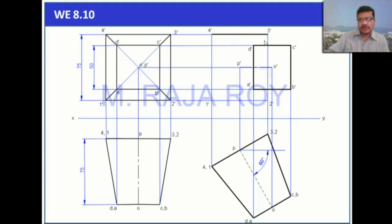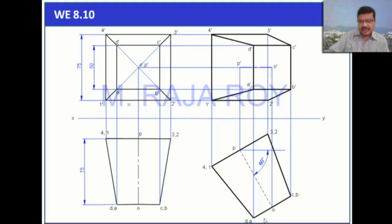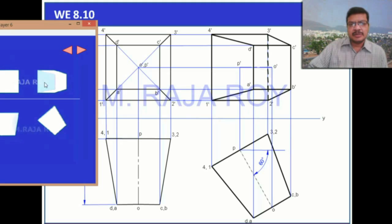Draw the visible edges: edge 4 3 is on the top side and is visible; 1 dash at the bottom is also visible; 4 1 is visible. Edges d4 and a1 are visible; c3 and d2 are visible. Invisible edges are 2 dash and 3 dash — edge 3 2 is completely invisible when seen from the front, so draw it with a dashed line. This completes the three-dimensional view.